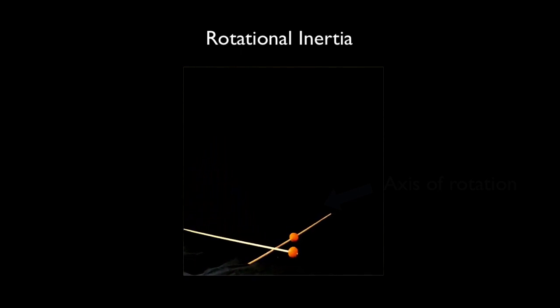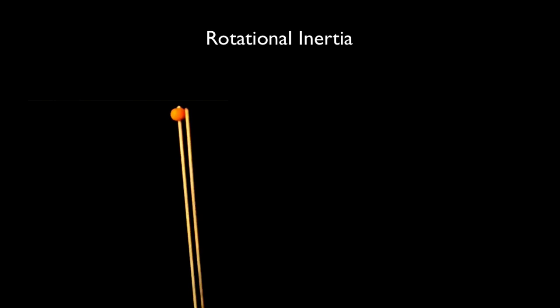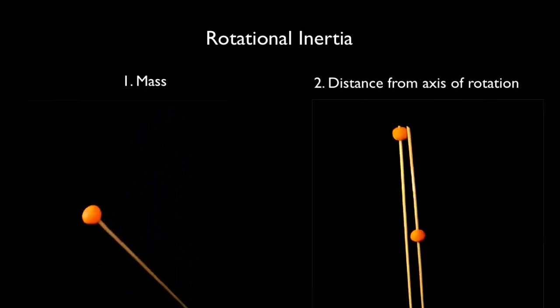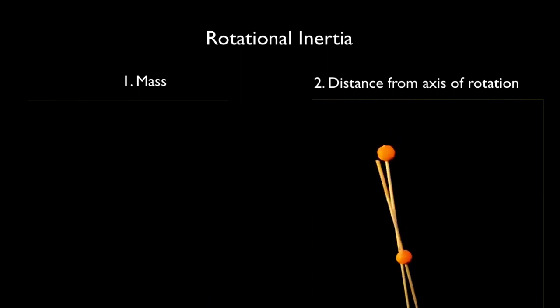Sorry to anthropomorphize, but the main point is that there are two ways to increase this thing we call rotational inertia. You can increase the mass, or you can increase the distance from the axis of rotation.